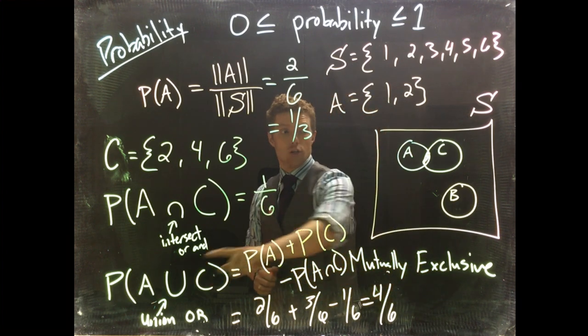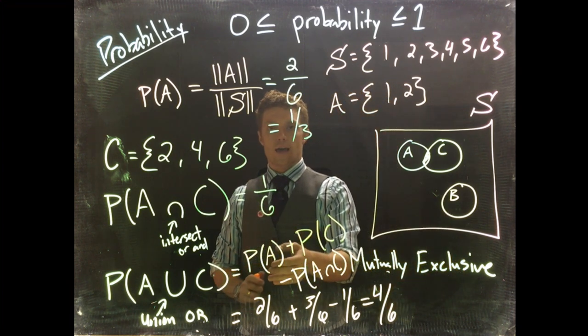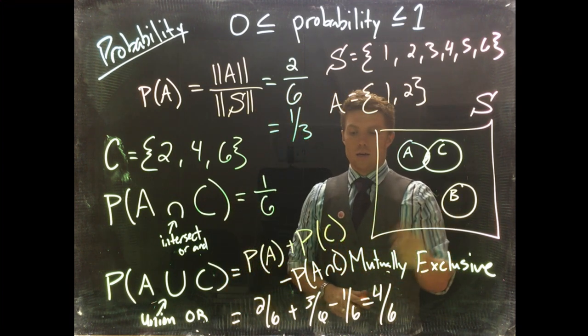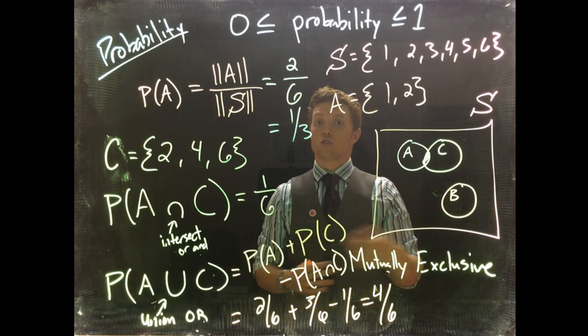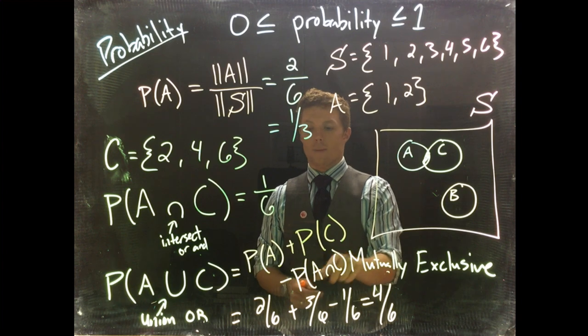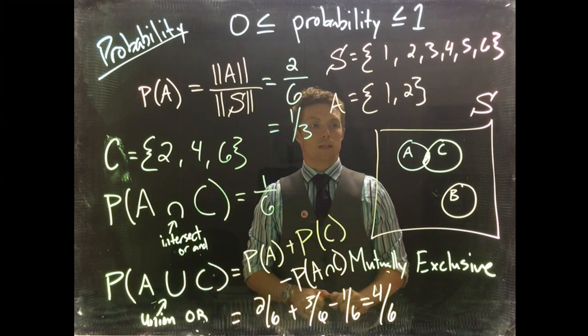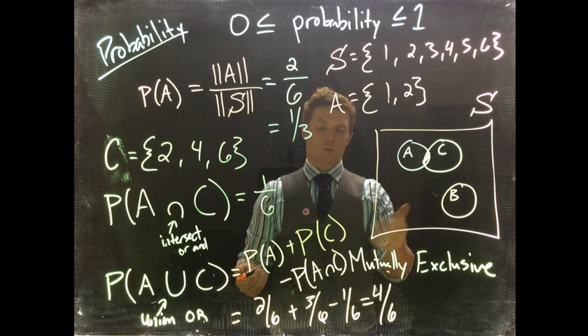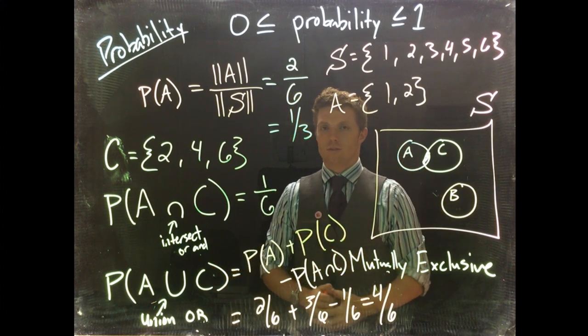If we were to do A union B, we would do the same thing with probability of A plus probability of B. The only difference is that the probability of A intersect B is zero because there's no overlap, so this term would just drop out to zero. A union B would be the probability of A plus the probability of B.